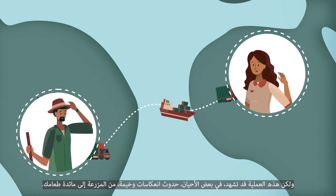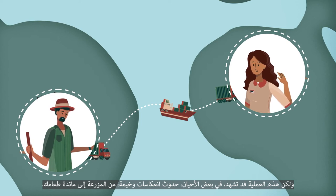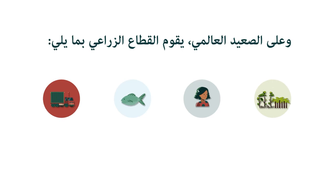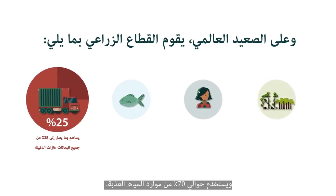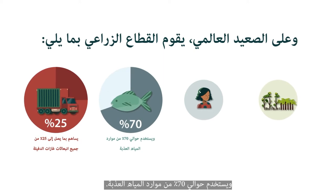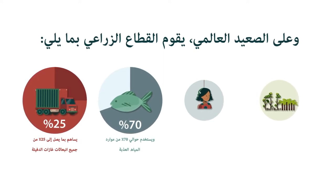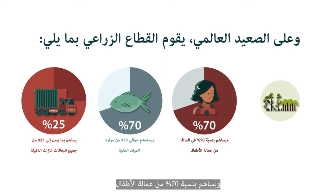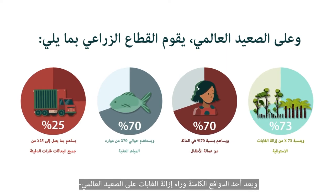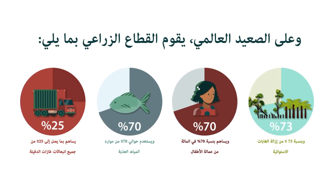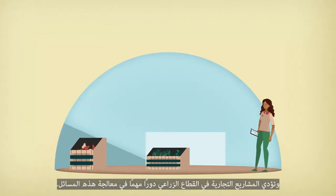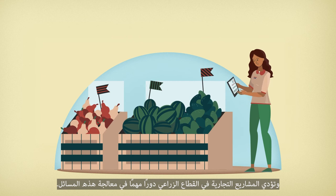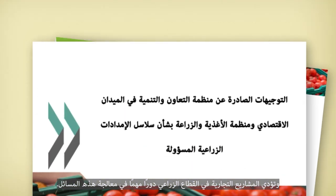However, at times there can be harmful impacts along the way that can take place from the farm to your table. Globally, the agricultural sector contributes up to 25% of all greenhouse gas emissions, uses approximately 70% of freshwater resources, accounts for 70% of child labour, and is a driver of global deforestation, accounting for up to 73% of tropical deforestation. Businesses in the agricultural sector have an important role to play in addressing these issues.